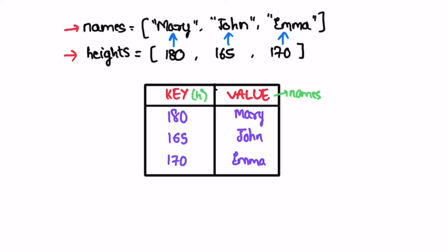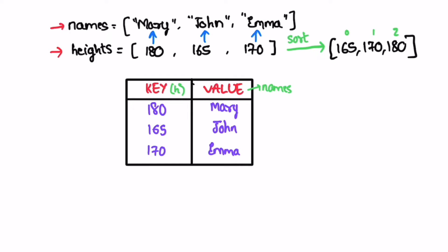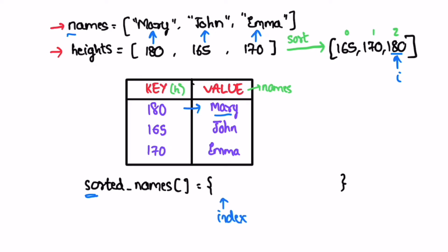Now we have a pair. We need to start off by accessing the maximum height among the heights array. To access the heights one by one from maximum to minimum, we can sort the heights array in ascending order and then access the max heights from right to left. After sorting, we create the output array — I'm going to name it sorted names — which will also be of the same length as the names array. We access the maximum height from the sorted array from the end, then get its name from the map. So 180 maps to Mary, and using map.get(180) you get Mary, which is inserted at the beginning of the output array.